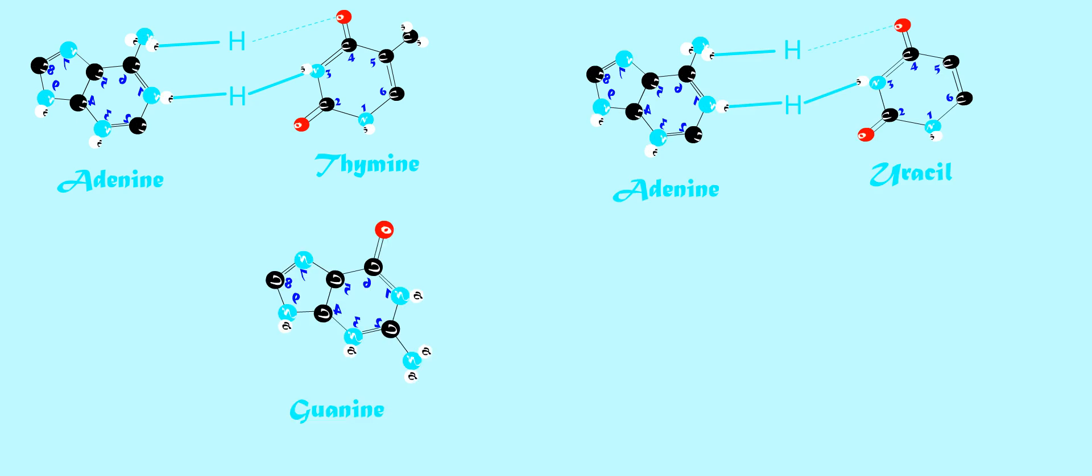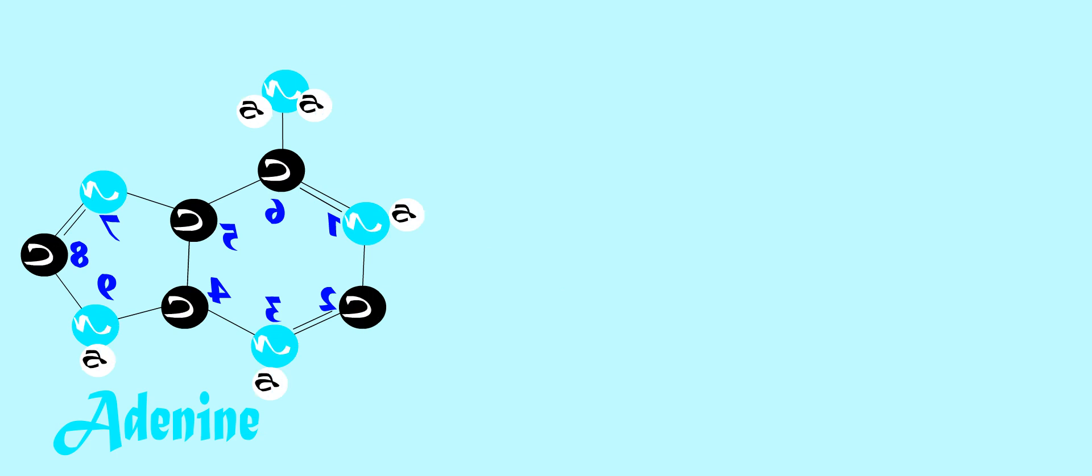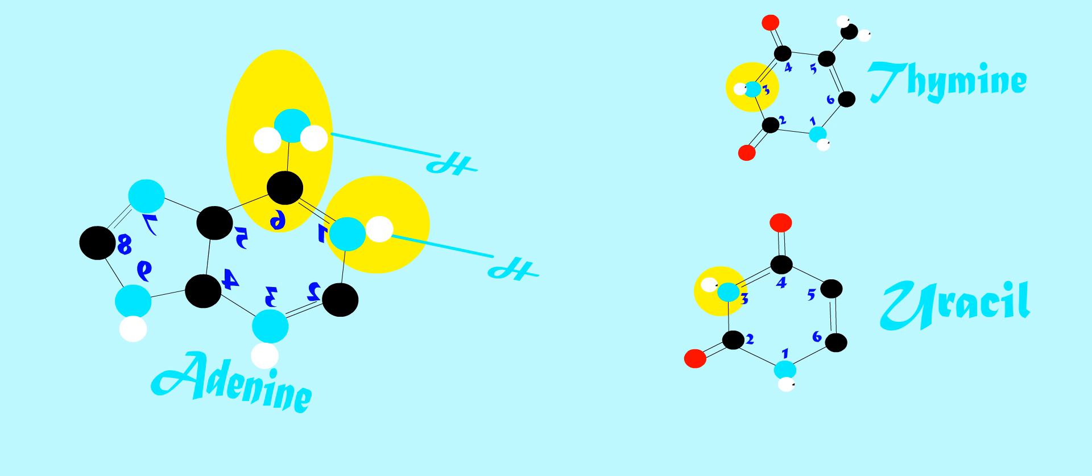and guanine will always form three hydrogen bonds with cytosine. This is due to the different structure of nucleotides. For example, the first and sixth nitrogen groups present in the purine adenine will form hydrogen bonds with the third and